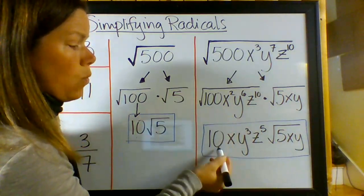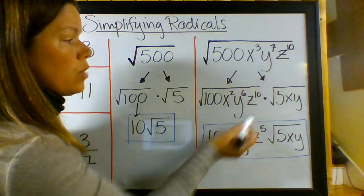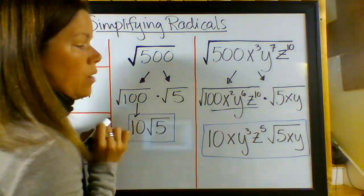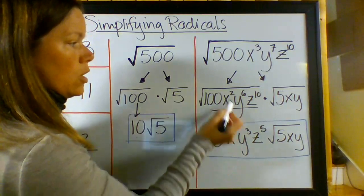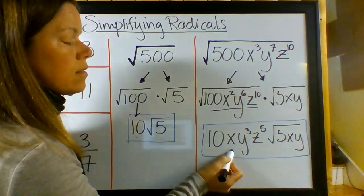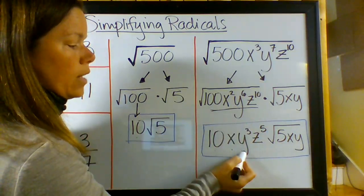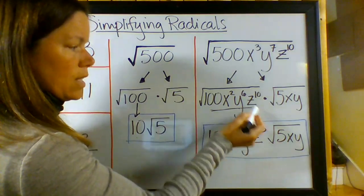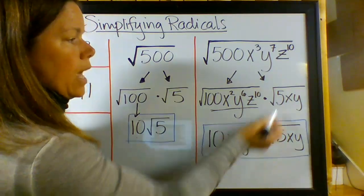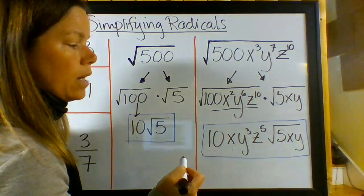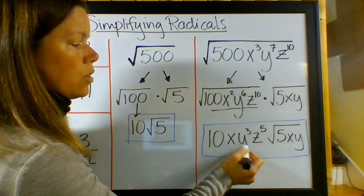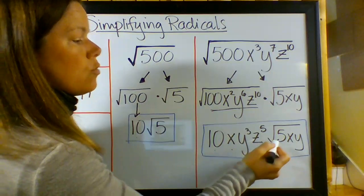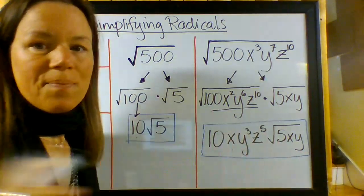So, now, one by one, again, I'm going to take the square root of what is in this radical on the left, 100. The square root of 100 is 10. The square root of X squared is X. The square root of Y to the sixth is Y to the third. The square root of Z to the tenth is Z to the fifth. And then I just keep that XY. So, I would say this, 10X, Y to the third, Z to the fifth, root 5XY.